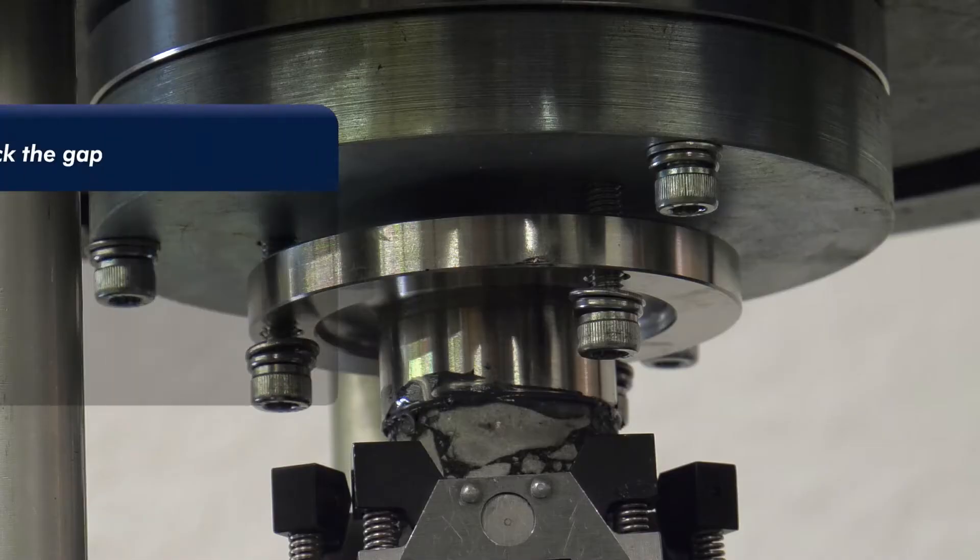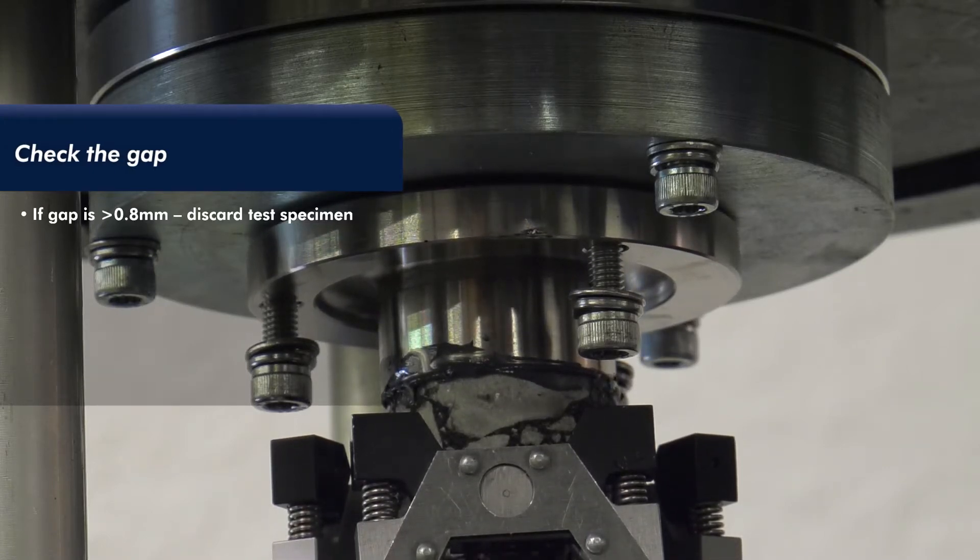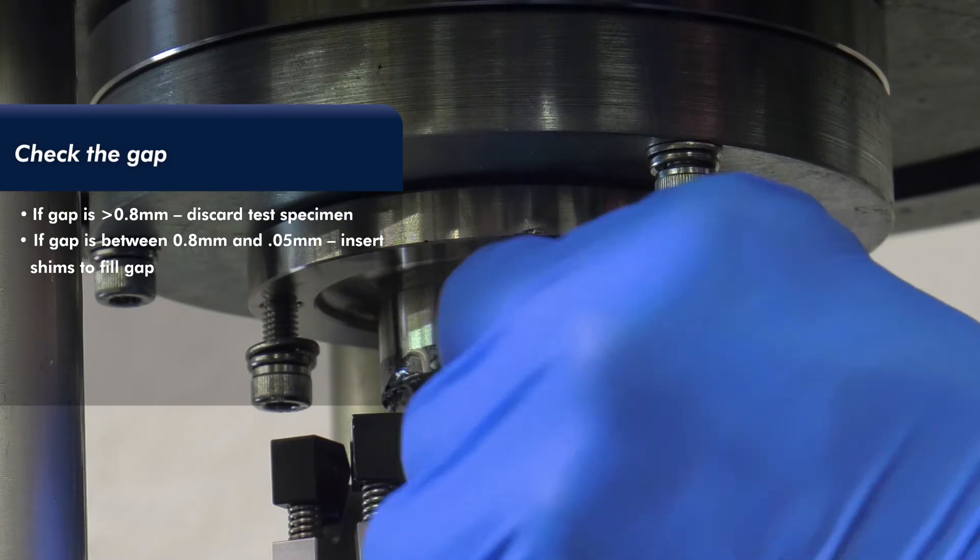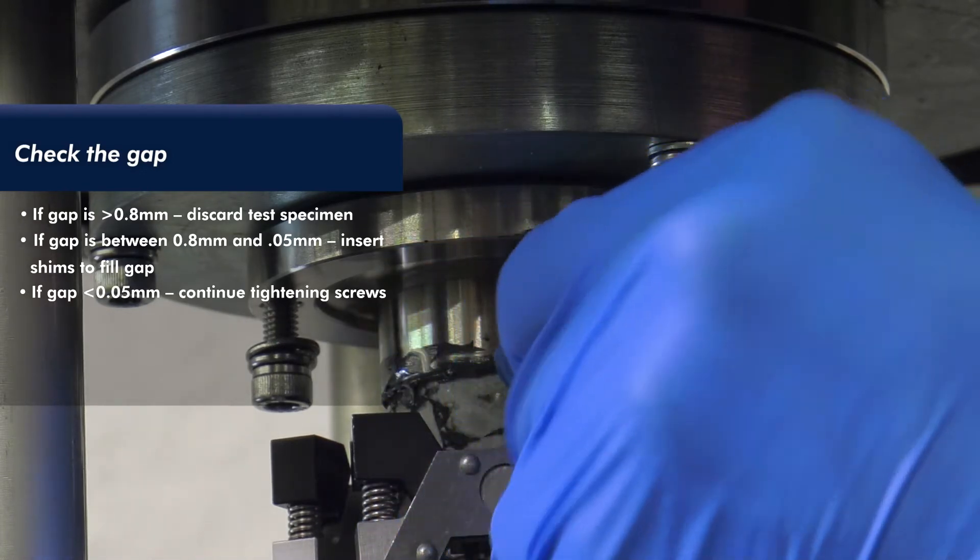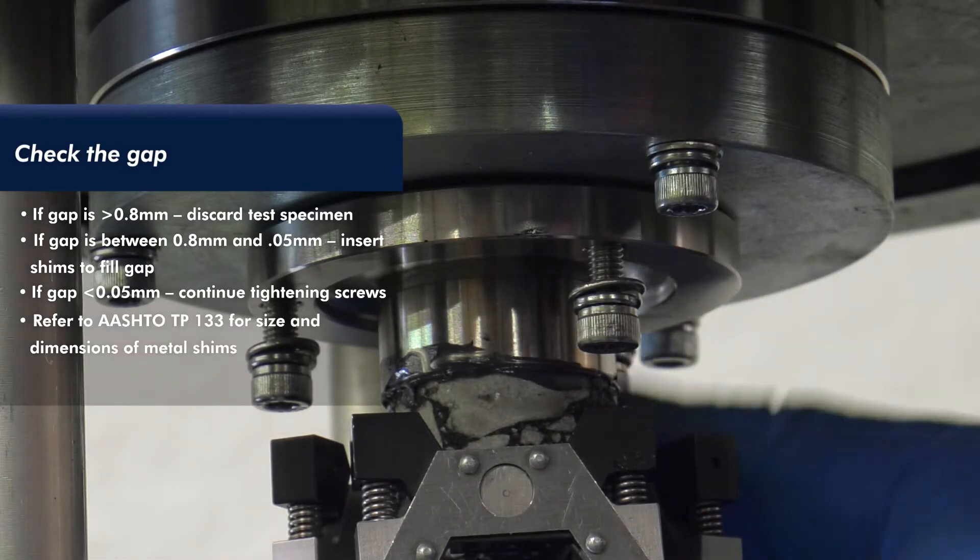Check the gap between the loading platen and the top platen. If the maximum gap is greater than 0.8 mm, discard the test specimen. If the gap is between 0.8 mm and 0.05 mm, insert shims to fill the gap. If the gap is less than 0.05 mm, continue tightening screws without inserting shims.